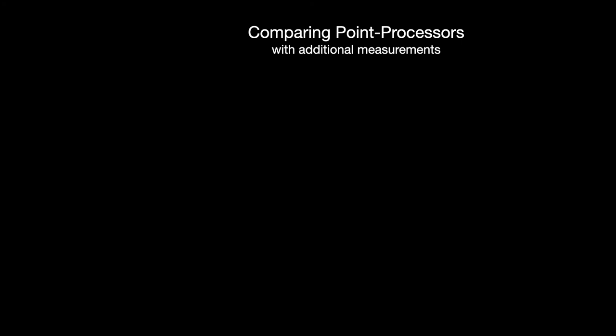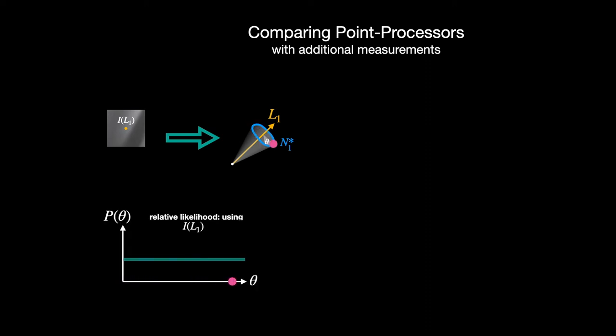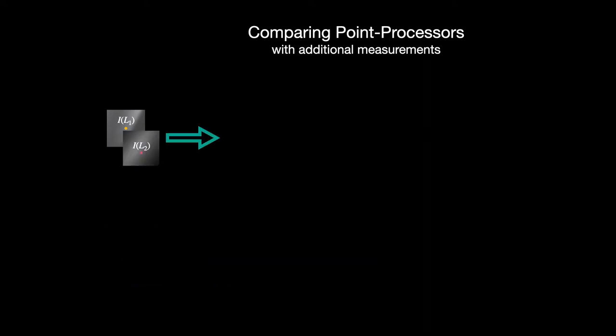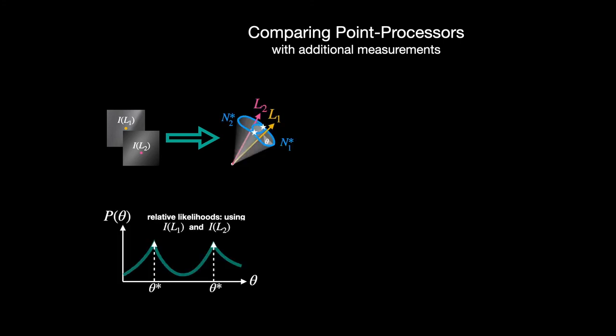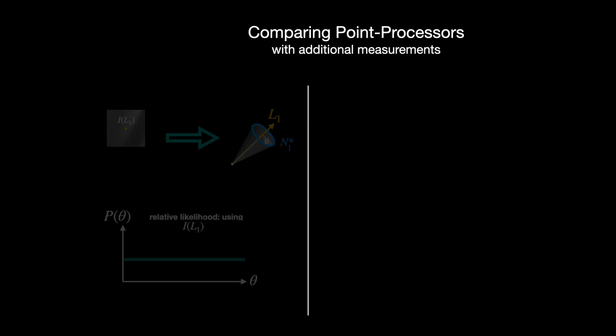Technical part over. Now that we have a new point processor, let's see how we can use it. First, recall how we use the traditional point processor when the lighting is known. Given the intensity at a single pixel, there is a cone of consistent surface normals. There is no reason to prefer any normal over the others, which I represent here in this graphical notion of likelihood. If we take a second image of the same shape under a different known light, the ambiguity reduces to a two-way choice. We can do something similar with our new point processor, but now with the critical advantage of not having to know the lighting beforehand.